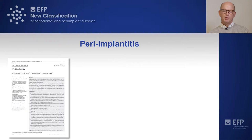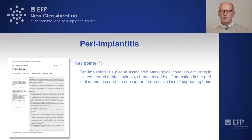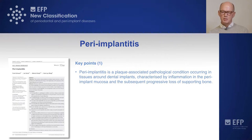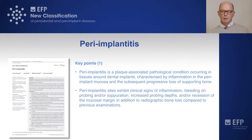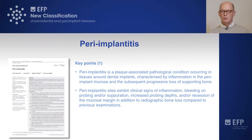The main features of peri-implantitis may be summarized as follows. Peri-implantitis is a plaque-associated pathological condition in the tissues around dental implants. It is characterized by inflammation in the peri-implant mucosa and the subsequent progressive loss of supporting bone. In addition, peri-implantitis sites exhibit clinical signs of inflammation, bleeding on probing or suppuration, increased probing depths, and or even recession of the mucosal margin, in addition to the radiographic bone loss compared to previous examinations.